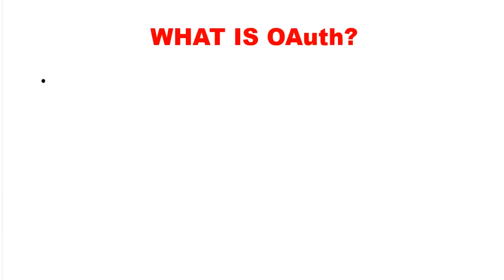First we will discuss what is OAuth. OAuth mainly stands for Open Authorization and it is an open standard for access delegation. It is commonly used as a way for internet users to grant websites or applications access to their information on other websites without giving them passwords. This mechanism is used by companies such as Amazon, Google, Facebook, Microsoft and Twitter to permit users to share information about their accounts with third party applications or websites.